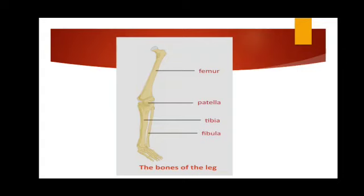The cap-like structure you see on your knees is the kneecap, known as the patella. Each foot contains 26 bones — 7 bones in the ankle and 19 bones in the rest of the foot. Similar to the hand, the feet also have these small bones which help in the movement of your legs.